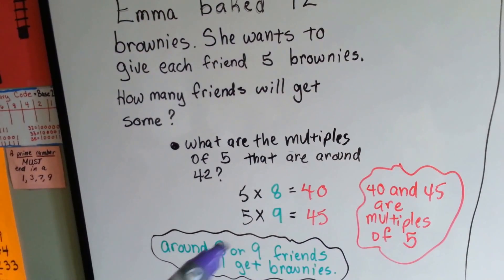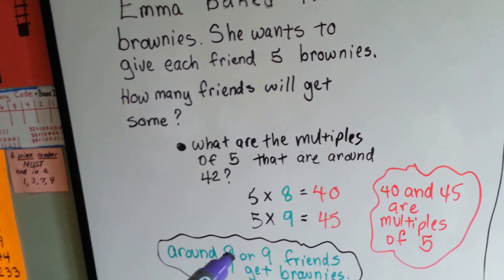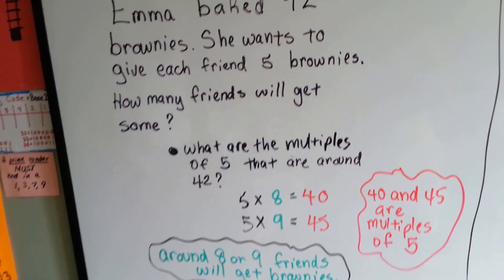And chances are, it's 8 friends because this is 45 and she only has 42. So I'd say 8 is the best estimate for the answer. So let's try another one.